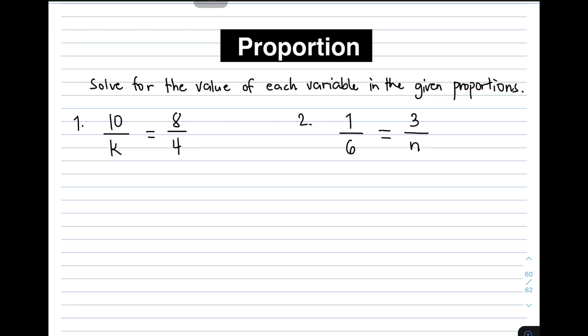So what is the way or what is the process on how to do it? So we have here, we call the process cross multiplication. This is our process for this problem.